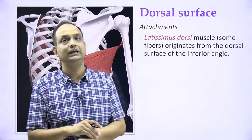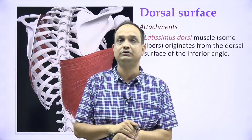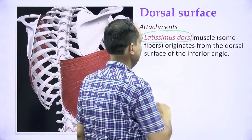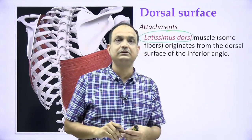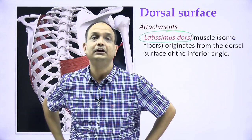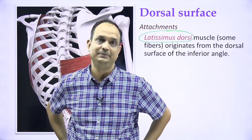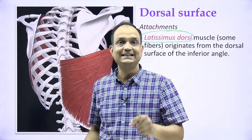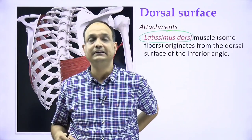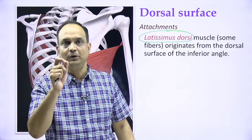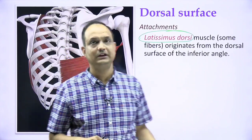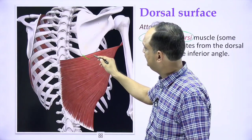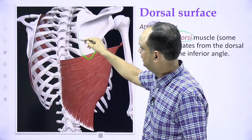Supraspinatus muscle originates from the medial two-thirds of the supra-spinous fossa, and infraspinatus arises from the medial two-thirds of the infra-spinous fossa. So the muscles present on the dorsal surface of the scapula are supraspinatus and infraspinatus, and both are supplied by the suprascapular nerve. There is one more attachment on the dorsal surface — the latissimus dorsi muscle.